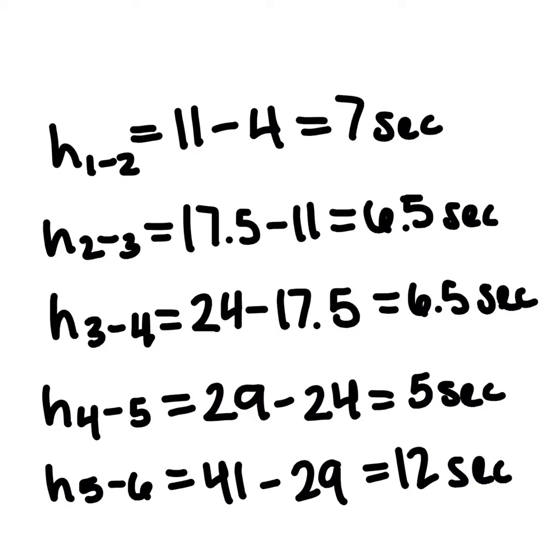For example, the first one we did was car one to car two. So we got 11 minus 4, which is a headway of seven seconds.